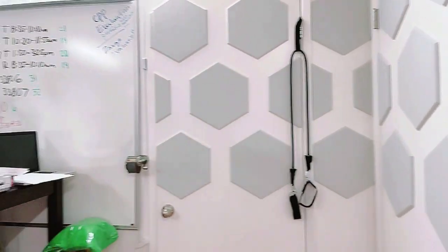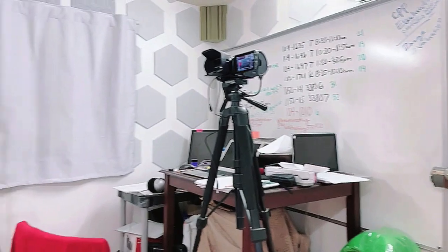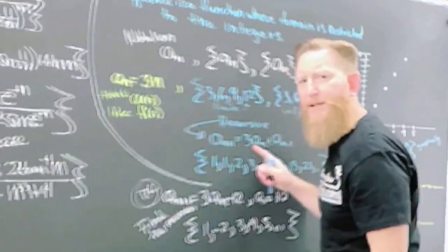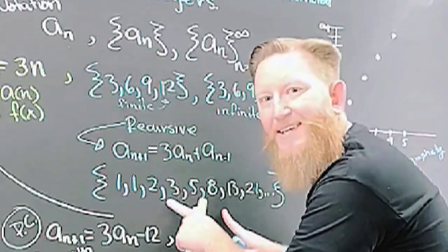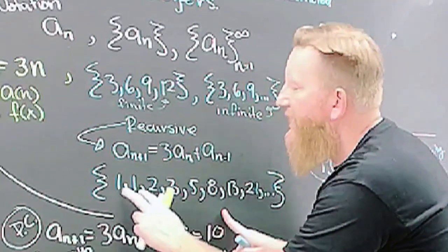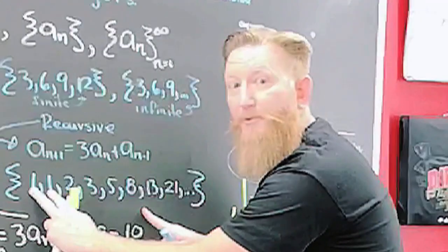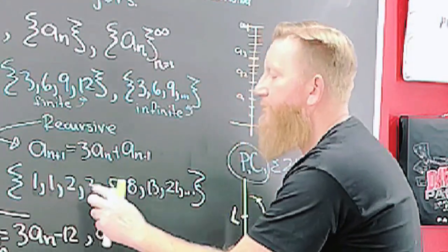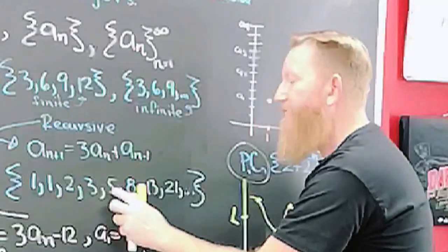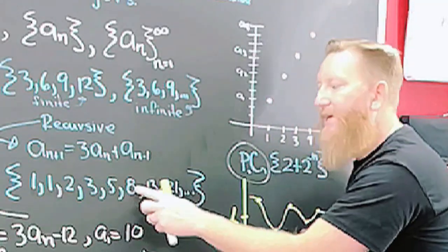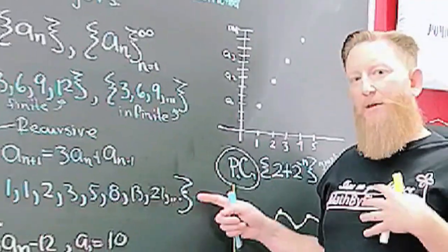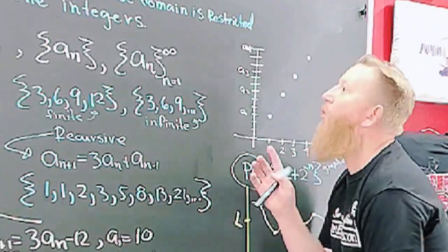One of the famous examples: if you take the sum of the two terms before it, you get: 1 plus 1 is 2, 1 plus 2 is 3, 2 plus 3 is 5, 3 plus 5 is 8. That's the Fibonacci sequence — it's kind of famous.